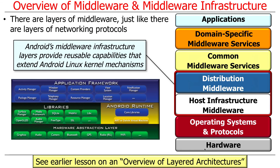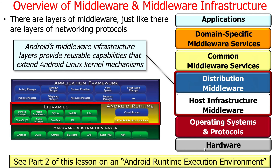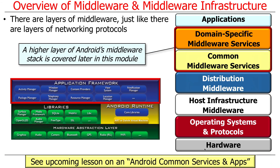Those are the things that add additional capability on top of the Android Linux kernel. There's also something called the hardware abstraction layer, which is Android-centric, as well as the runtime execution layer, the libraries, and the application framework layer. The lower layers — the green, yellow, and core libraries portion — is what I call middleware infrastructure. The application framework layer above that is middleware, but higher-layer middleware. We'll talk about all of these in more detail.